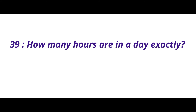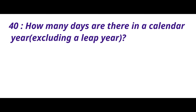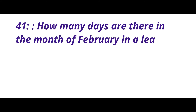How many hours are in a day exactly? The answer is 24 hours. How many days are there in a calendar year excluding a leap year? The answer is 365 days. How many days are there in the month of February in a leap year? The answer is 29 days.